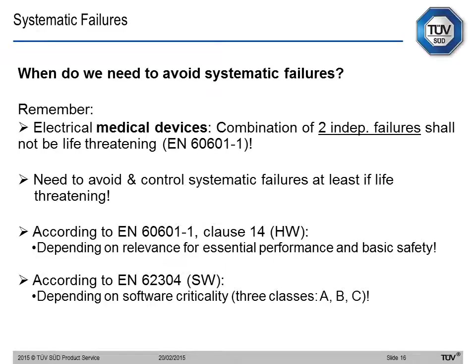When do we need to avoid systematic failures? The key rule is that the combination of two independent failures shall not be life-threatening. Therefore, we need to avoid controlled systematic failures at least when life is threatened. From a hardware perspective in clause 14, this depends on relevance for essential performance and basic safety. From a software point of view, it depends on the criticality of the software itself — class A, B, or C.